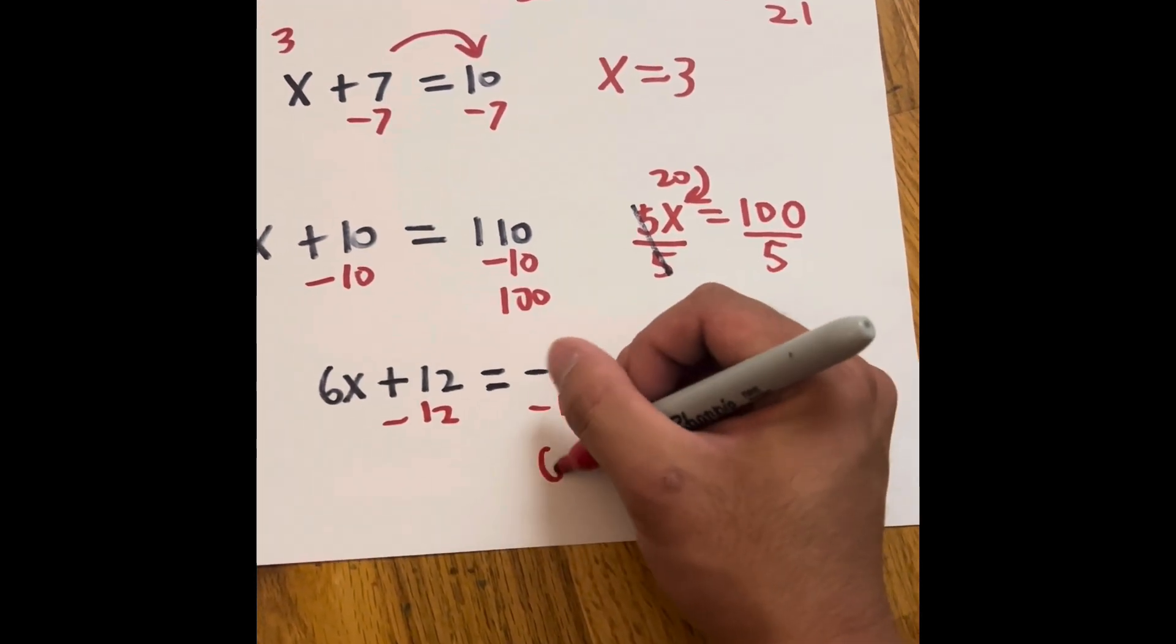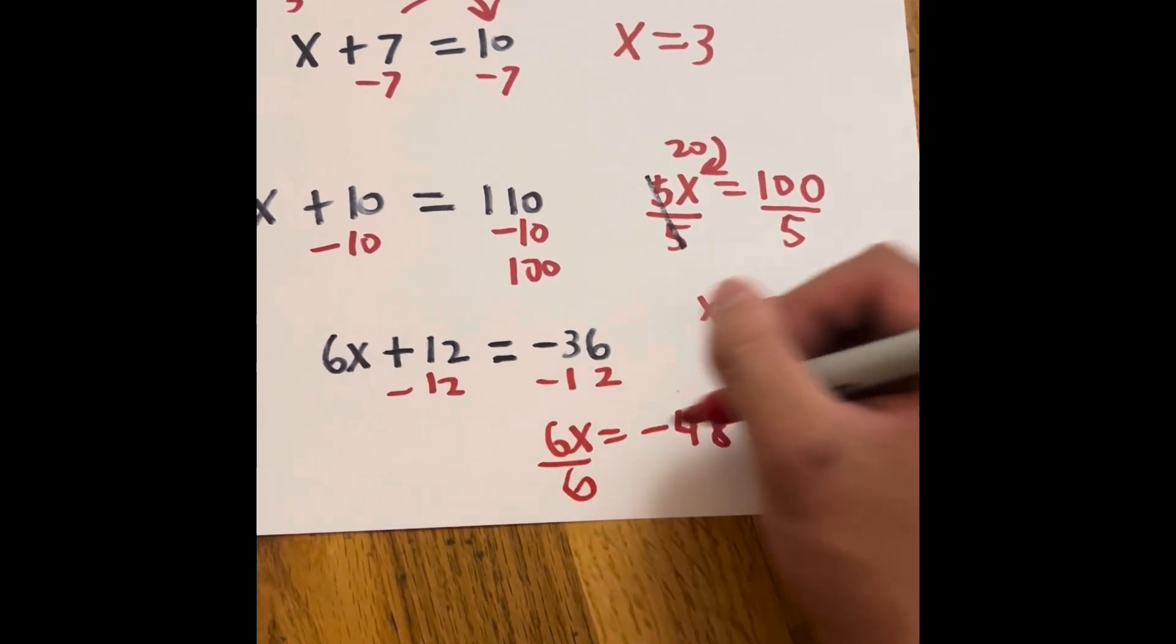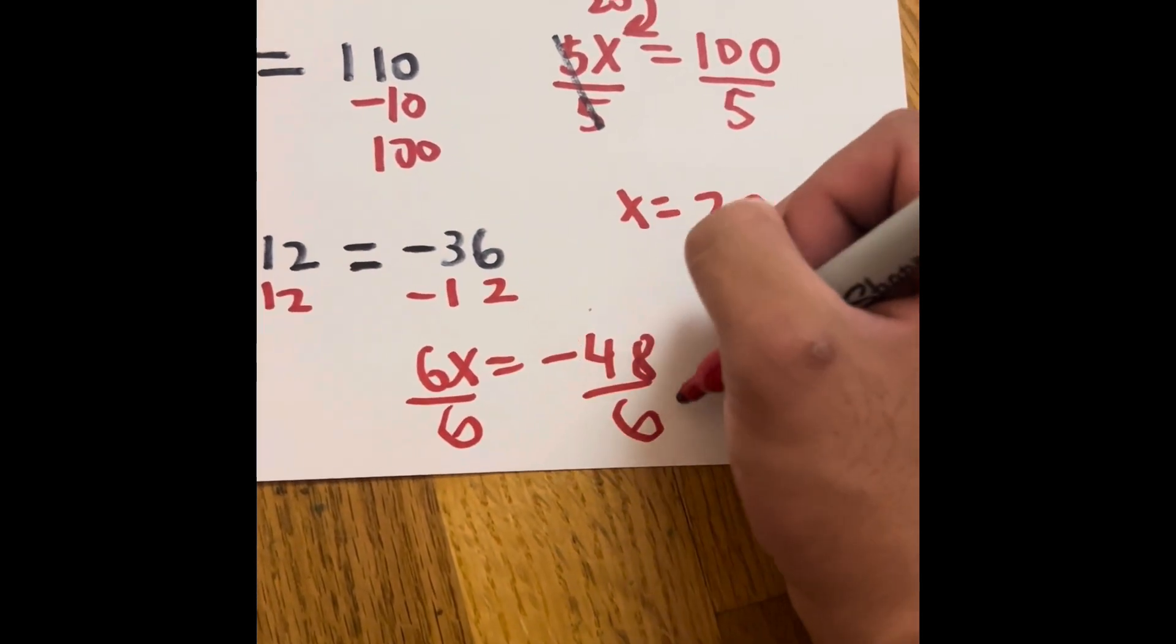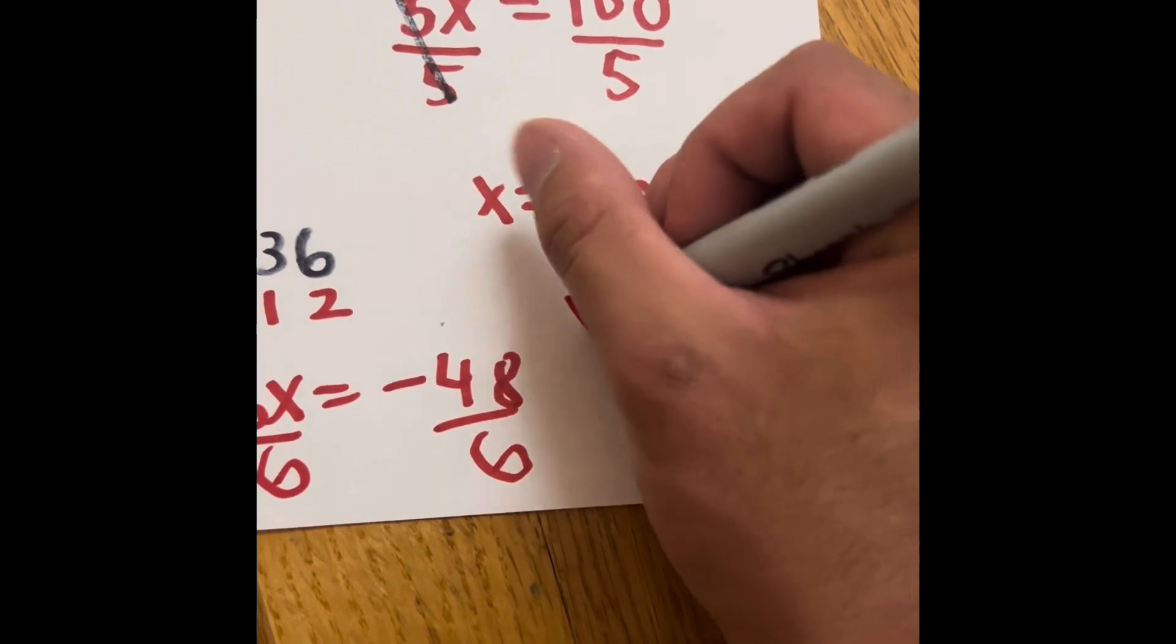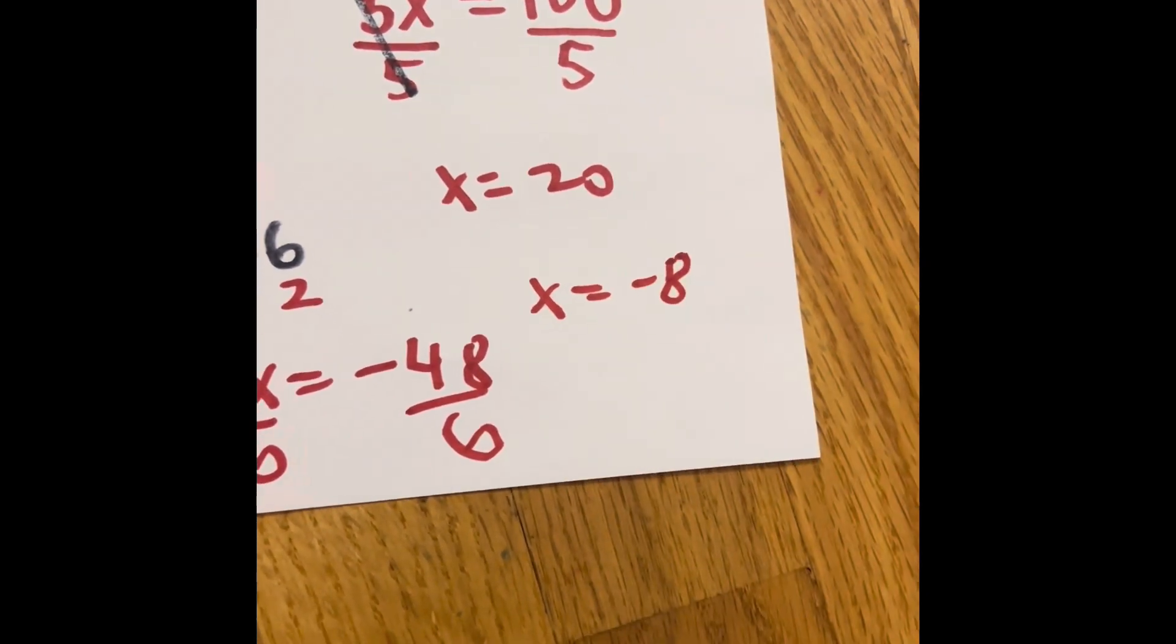We have 6x equals negative 48. Divide by 6 and divide by 6. Negative 48 divided by 6 is going to equal 8, but it's actually x equals negative 8.